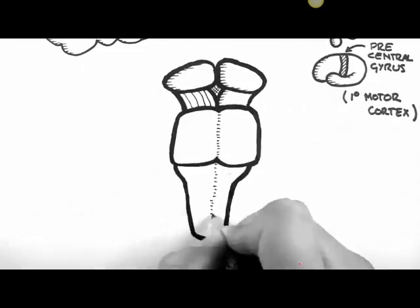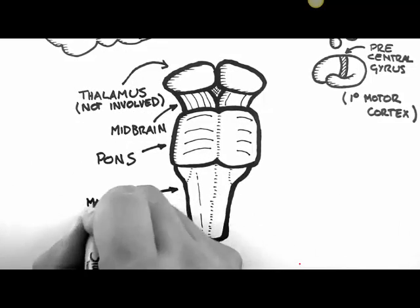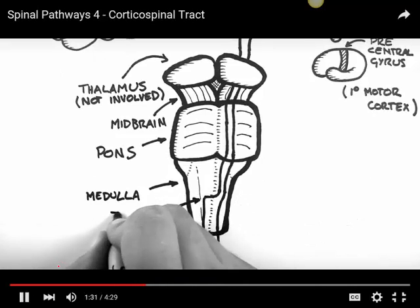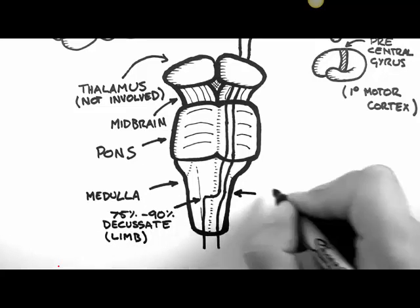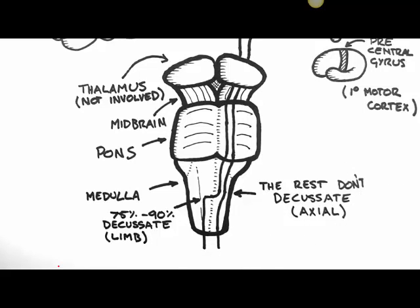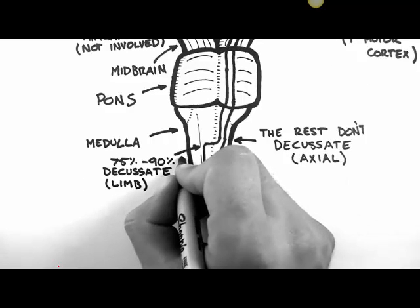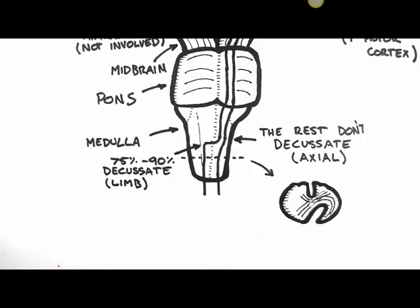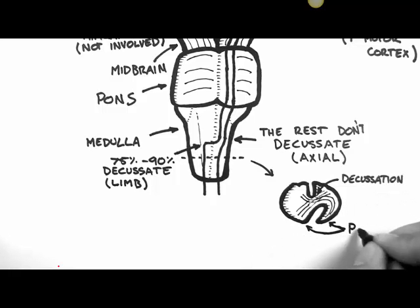The neurons descend through the internal capsule and into the brain stem — through the midbrain, pons, and medulla. As the pathway descends into the medulla, 75 to 90% of the fibers decussate; these are the fibers that will innervate the limbs. The axial fibers don't decussate there. This decussation, called the decussation of the pyramid, is one of the biggest decussations in the nervous system. The pyramids are the corticospinal tracts running through the medulla, which is why the corticospinal tract is also called the pyramidal tract.